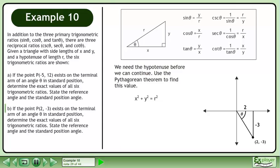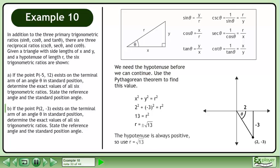We need the hypotenuse before we can continue. Use the Pythagorean theorem to find this value. Replace x with the adjacent side, 2, and replace y with the opposite side, negative 3. This gives us 13 = r². Square root both sides to get r = ±√13. The hypotenuse is always positive, so use r = √13.